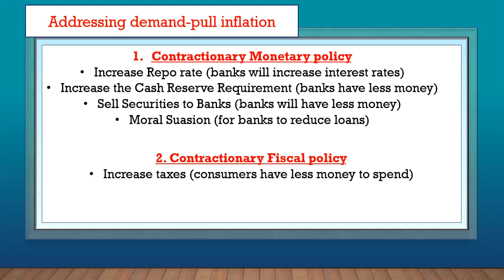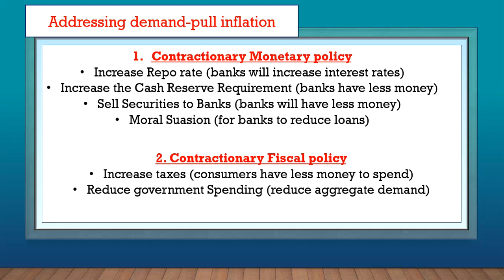From SARS — the South African Revenue Services — they can increase taxes. We want less spending to control demand-pull inflation, so if people pay higher taxes, they won't have enough money to spend. The government can also reduce its spending — if the government reduces money spent on projects and does not give money to people, this will reduce aggregate demand, thus controlling demand-pull inflation.